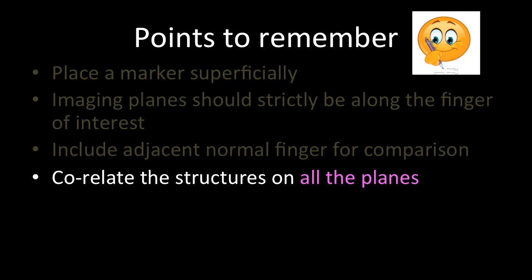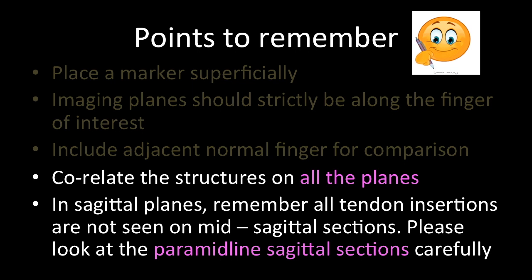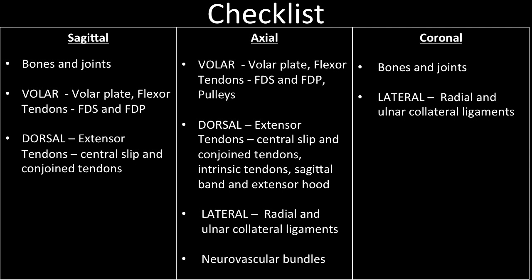Points to remember: correlate all structures across all imaging planes. On sagittal planes, remember that not all tendon insertions are seen on midline sections — particularly the lateral bands for the extensor compartment and the FDS insertion for the flexor compartment — so look carefully at the paramidline sagittal sections. A checklist showing which structures are better visualized on which sections is provided. Thank you for watching. If you liked the video, please hit the like button, leave feedback in the comments, and subscribe to the Indian Radiologist YouTube channel and social media platforms. For any queries on this topic, type in the comment section and we'll get back to you.